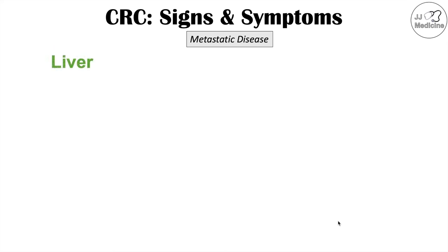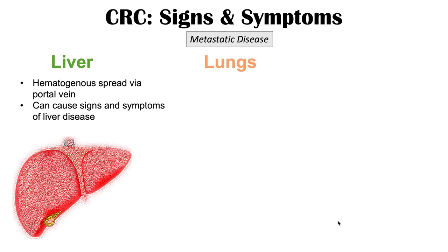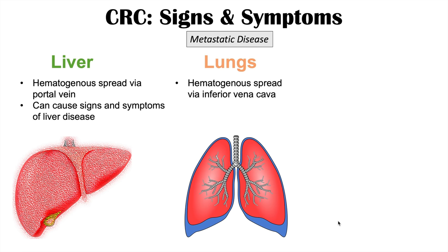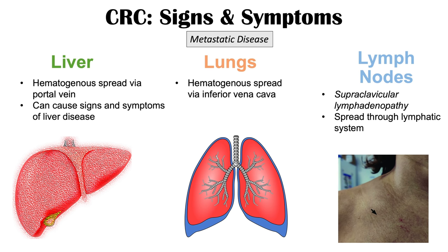There are also signs and symptoms of metastatic disease. Cancer from the colon can spread to the liver through hematogenous spread via the portal vein, causing signs and symptoms of liver disease. The lungs can also be impacted via hematogenous spread through the inferior vena cava, potentially leading to breathing issues. The lymph nodes can also be affected — supraclavicular lymphadenopathy above the clavicles can be a sign of metastatic colon cancer spreading through the lymphatic system.